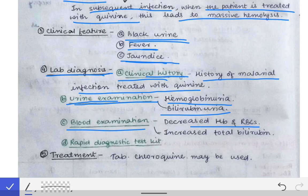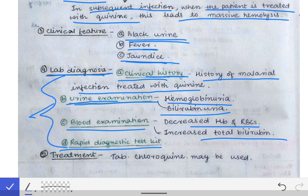We can also do blood examination, where we will see decreased hemoglobin and RBCs, and increased total bilirubin. Additionally, we can use rapid diagnostic test kits as discussed in the malaria diagnosis part. This is how we can diagnose black water fever. The treatment is chloroquine, which can be used for treatment of this condition.